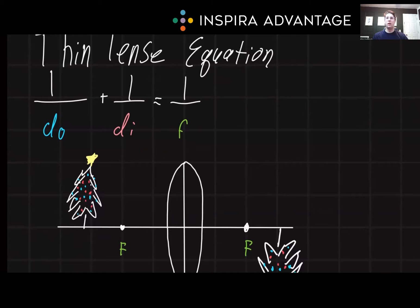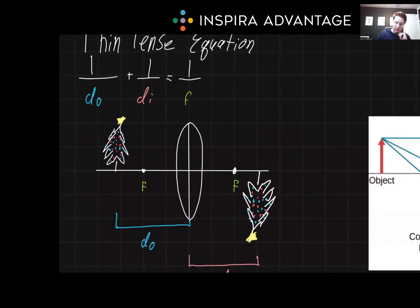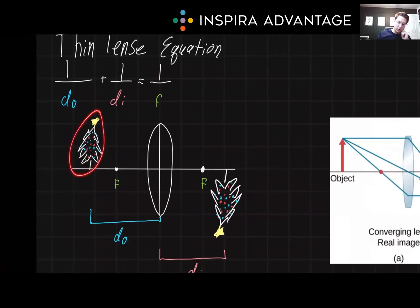The key to understanding lenses lies in how they form images. The thin lens equation: 1 over DO plus 1 over DI equals 1 over focal length, where DO is the distance the object is. So in this case, I drew a little Christmas tree. It's the distance the object is from the lens.